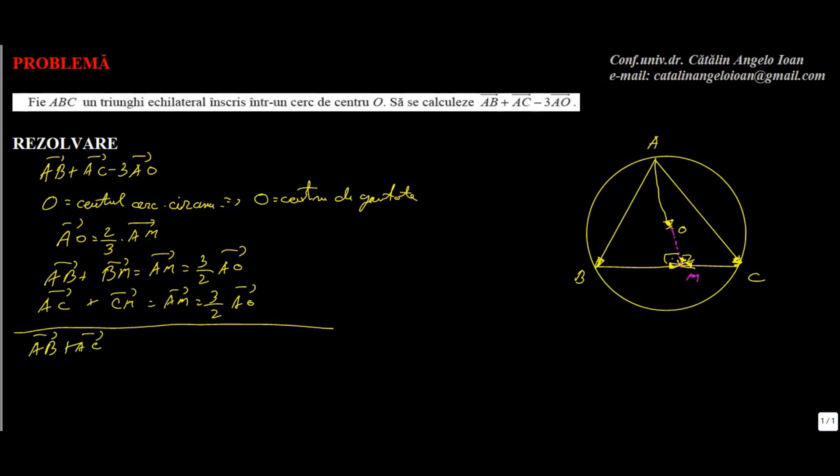Dar cât este BM plus CM? Atenție, vectorii BM și CM au aceeași direcție pentru că se află pe aceeași dreaptă, au sensuri opuse - BM pleacă în partea asta, CM pleacă în partea cealaltă - și au aceeași lungime, BM egal cu CM, pentru că ei sunt jumătate din latura BC. Prin urmare rezultă de aici că BM plus CM este vectorul zero.